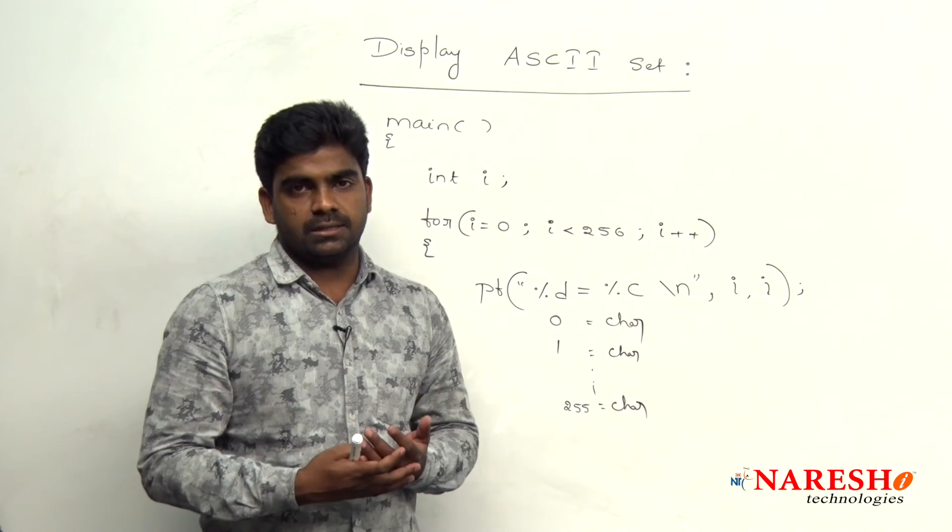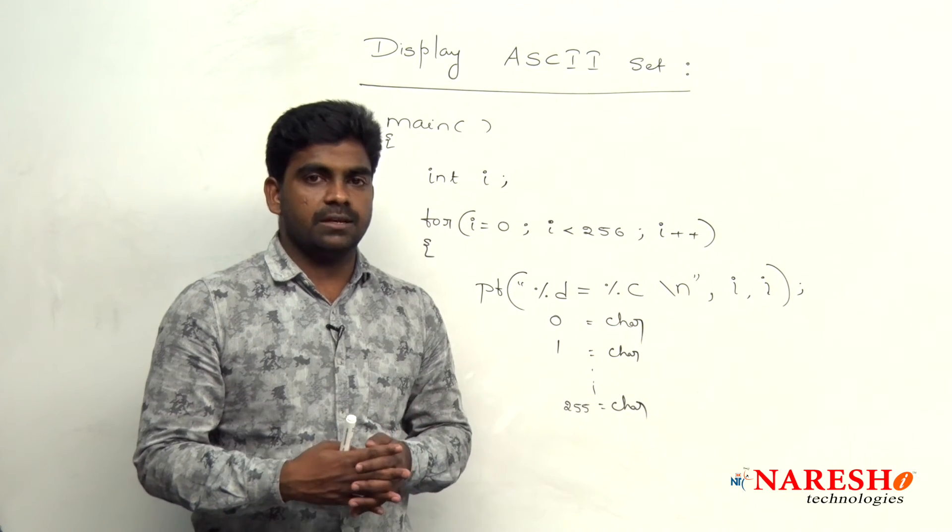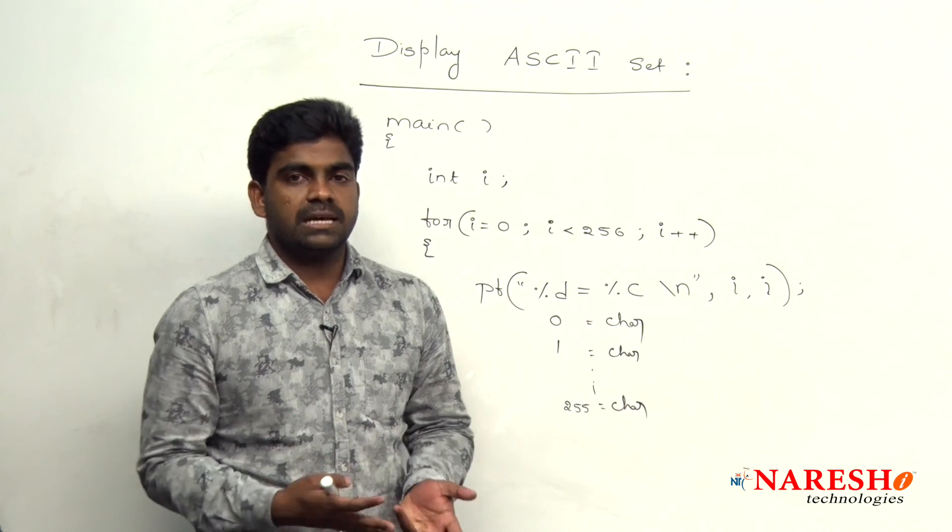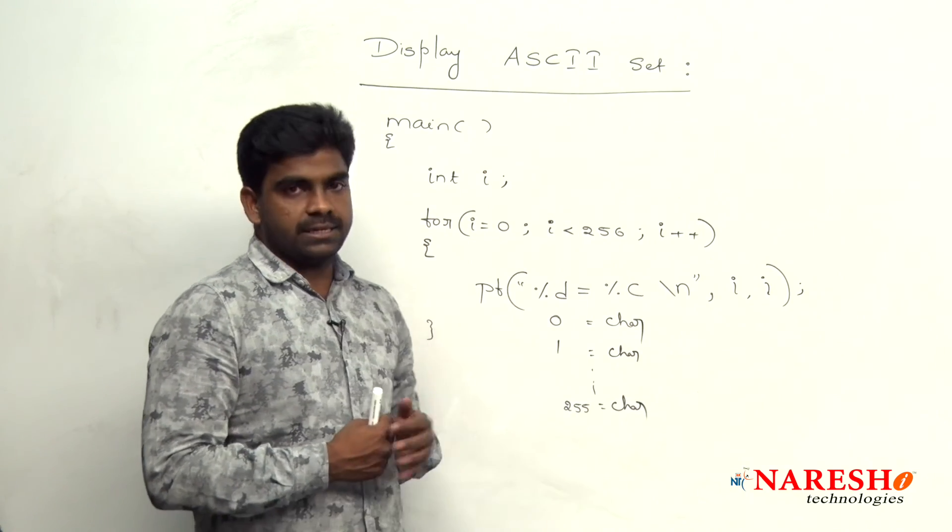If you see the output then you can understand the things. For example, in a language only 200 symbols are there, remaining 56 symbols are empty, right? So, that is how it will show that ASCII character set.